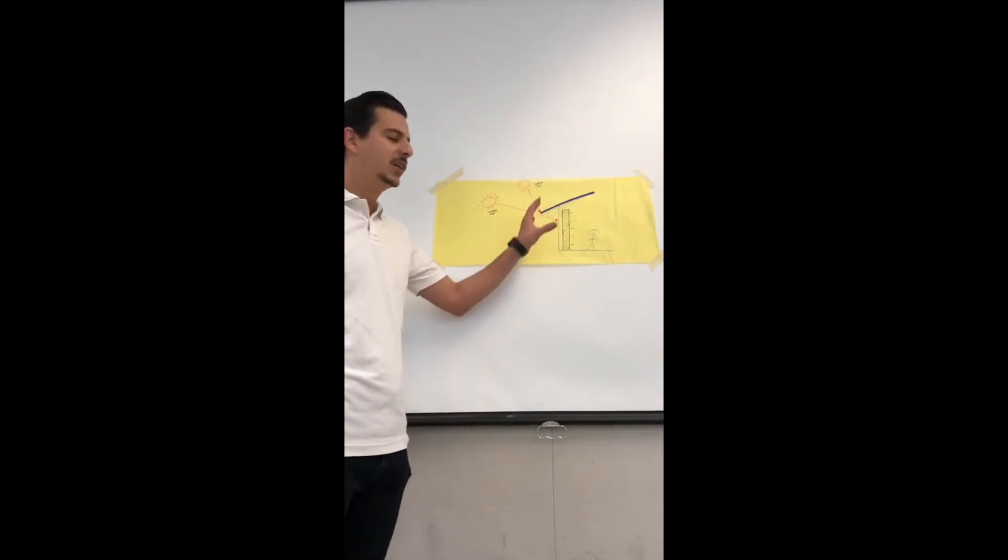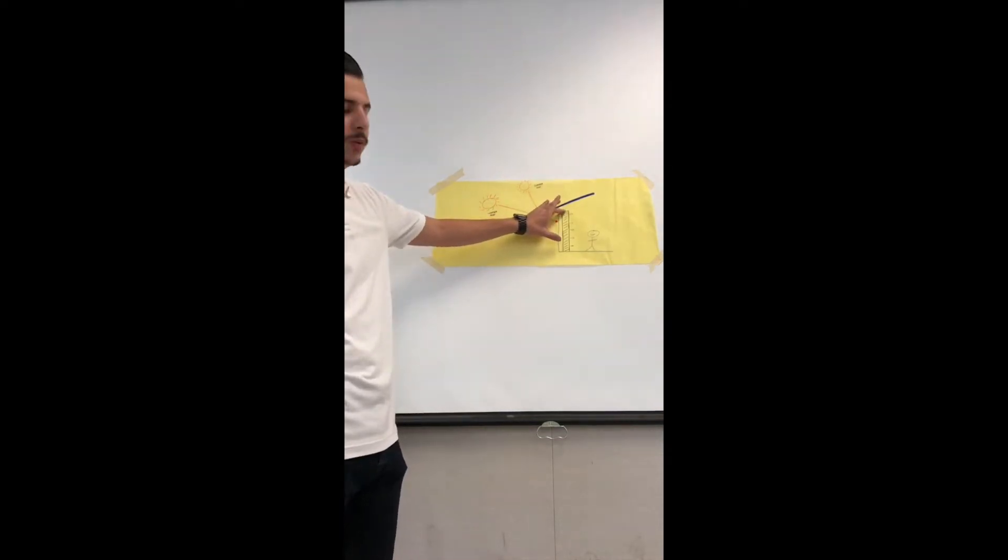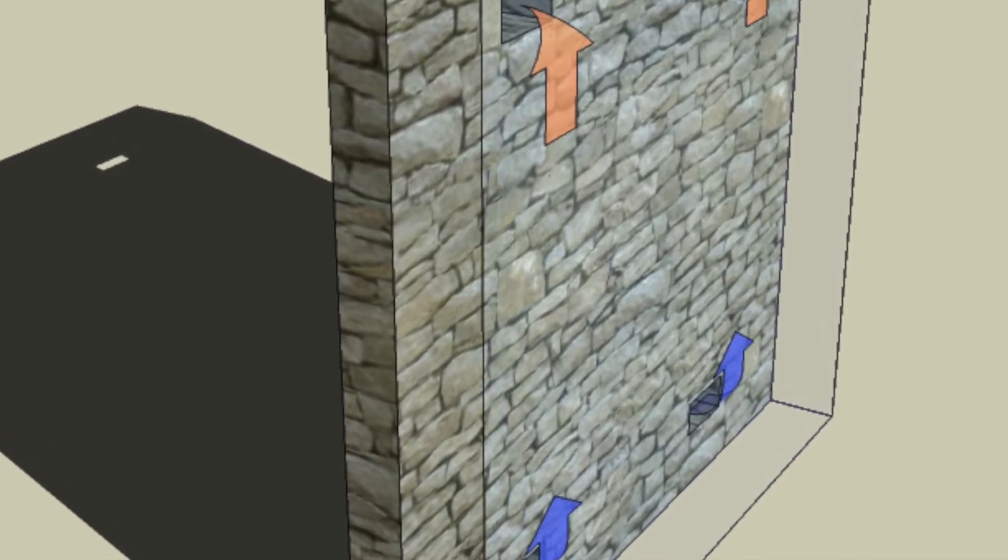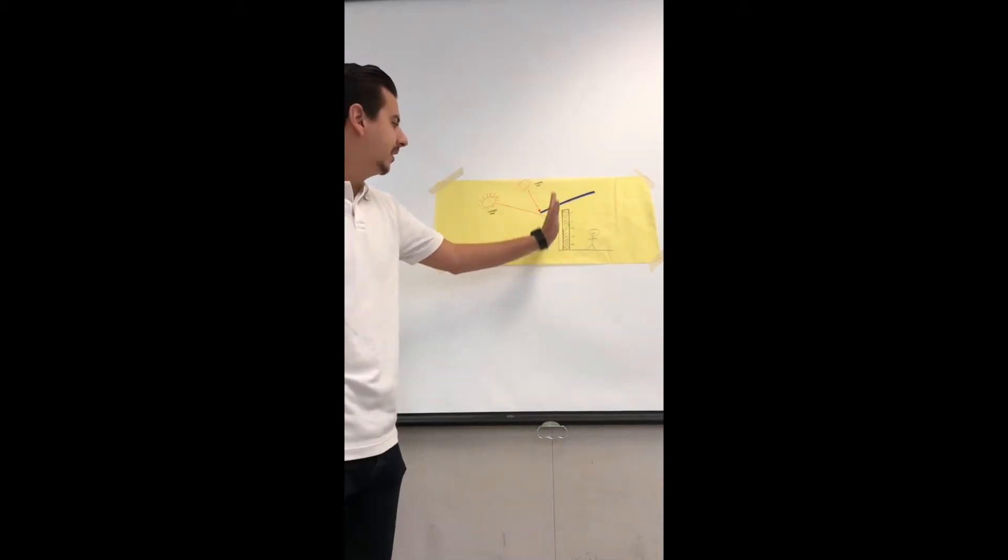When using a Trombe wall, you can either choose to have a vented or non-vented setup. In a vented setup, you're going to have a vent located at the top of the wall as well as the bottom of the wall. And then basically as the sun penetrates through the glazing and the cavity of air is heated, the air is forced up through the vent at the top of the wall.